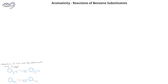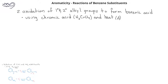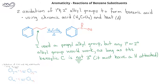The second set of reactions involving substituents is an oxidation reaction. Oxidation is carried out by chromic acid, H2CrO4, and it's done in the presence of heat. We can start with an alkyl substituent on the benzene ring, and by adding chromic acid in the presence of heat, we can turn the alkyl group into a carboxylic acid, so we end up with benzoic acid. However, this oxidation reaction only works if the alkyl group is a primary or secondary alkyl group — it does not work with tertiary alkyl substituents.